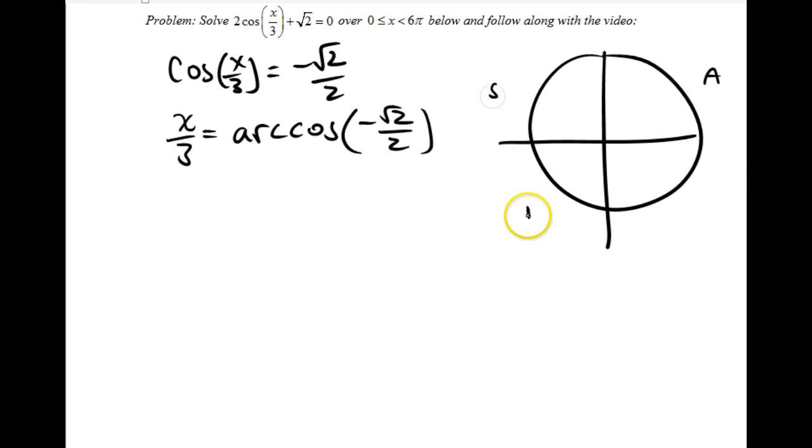Notice my ASTC, that makes sense. Cosine is positive here and here and negative here and here. I know that I'm dealing with a pi over 4 reference angle here and here because it's root 2 over 2 as my side, and now I notice that my angle is 3 pi over 4 in standard position or negative 3 pi over 4 in standard position.